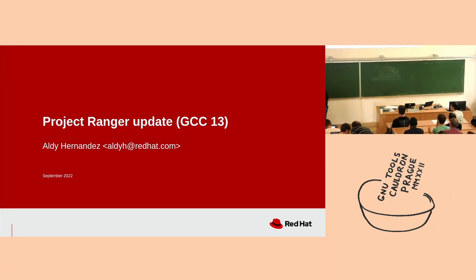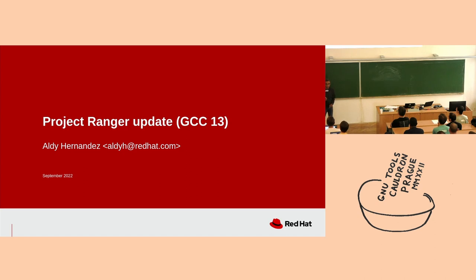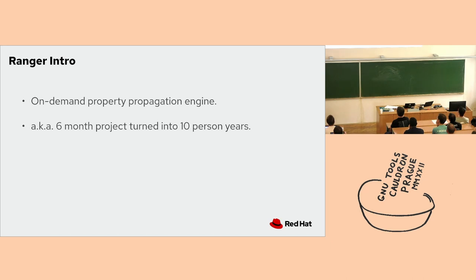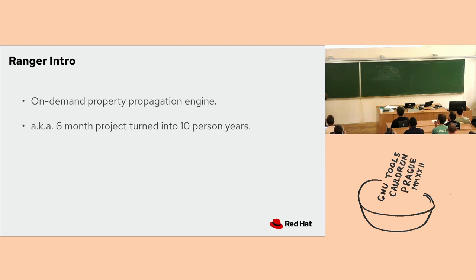I'm Aldi Hernandez, one of two engineers working on the Ranger. The other is Andrew McLeod, who couldn't make it today but is joining virtually. I'll give a brief intro to the Ranger and then talk about what we've been doing this year and what will come later. The Ranger is an on-demand property propagation engine — or as I like to call it, a six-month project that turned into a decade of our lives. Originally it started as a way to catch corner cases that VRP wasn't catching, and then it evolved into a generic on-demand property propagation engine very well suited to do VRP, but it could do other things too.